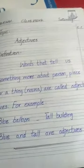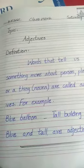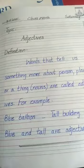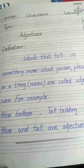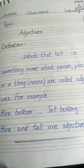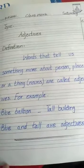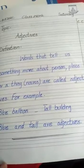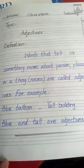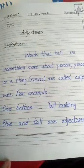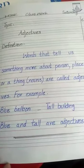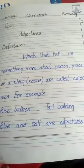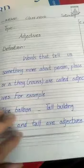Your first topic is adjectives. Definition: words that tell us something more about a person, place, or thing are called adjectives. For example, 'blue balloon' and 'tall baby' — blue and tall are adjectives.